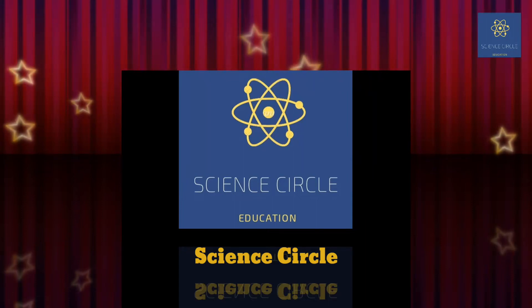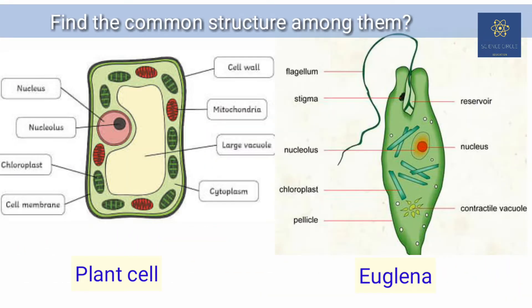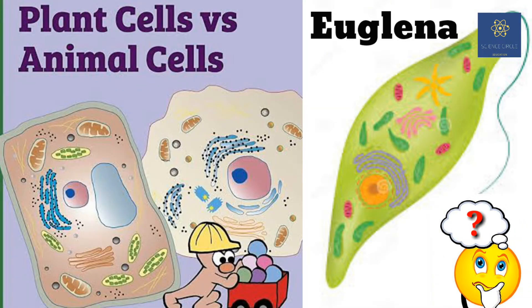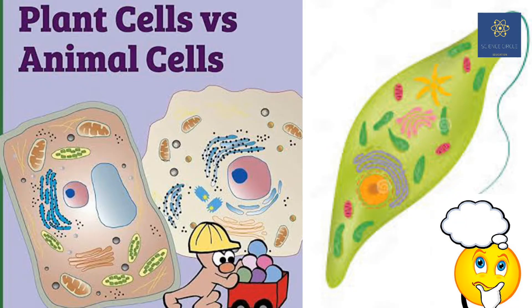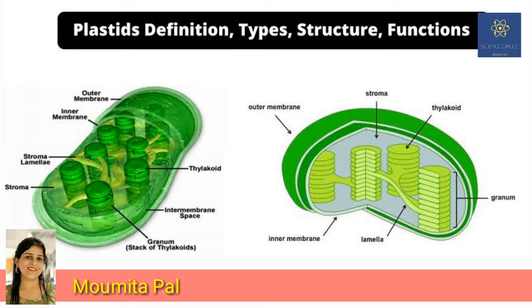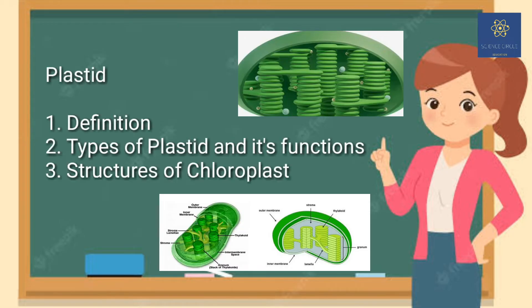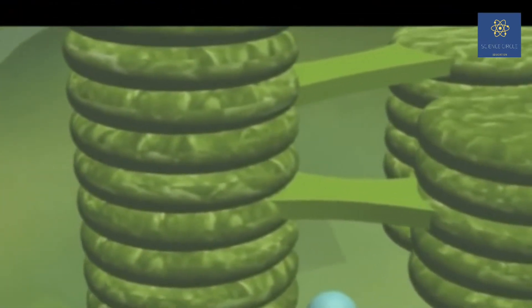Hello everyone, welcome back once again to Science Circle. Today we will be discussing about an organelle which is present only in plant cells and euglenoids but absent in animal cells. Guess the name of the organelle? Yes, you are right. Today Science Circle will discuss about plastids. In this video we will be discussing about the definition, the types of plastid, its function, and the structure of chloroplast. So without delay, please watch till the end.